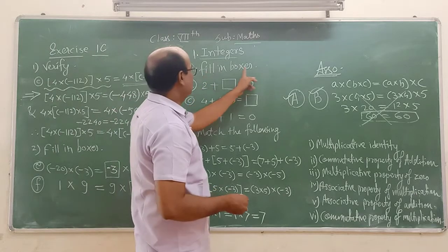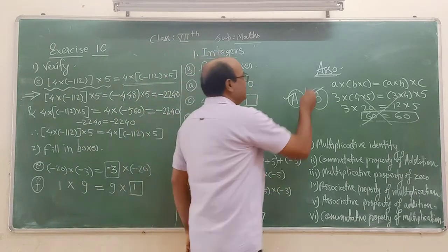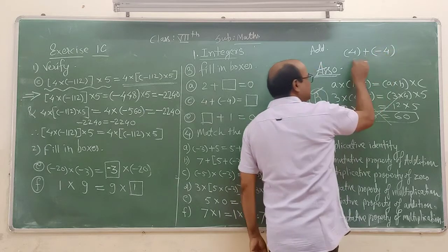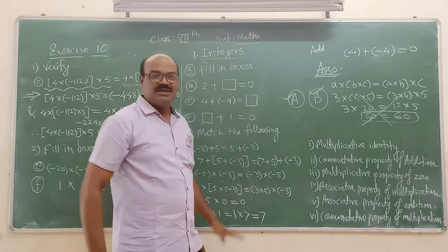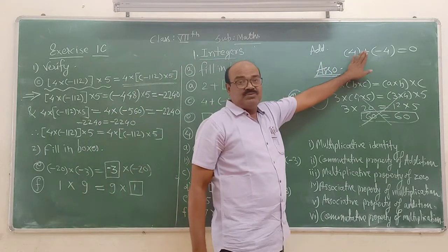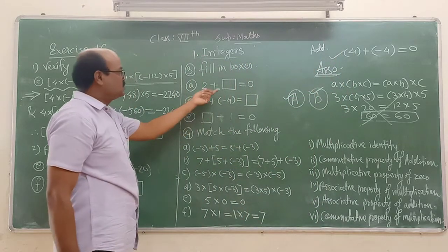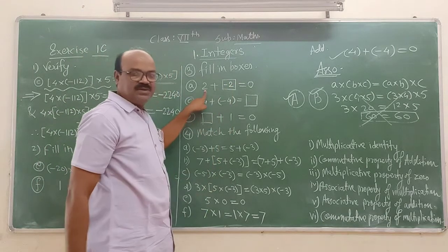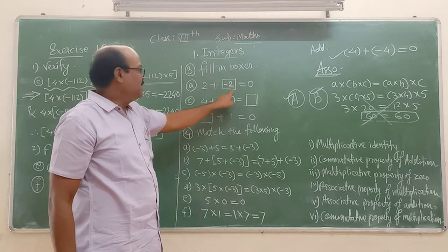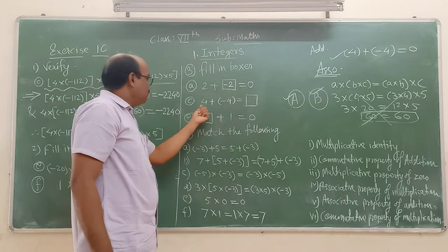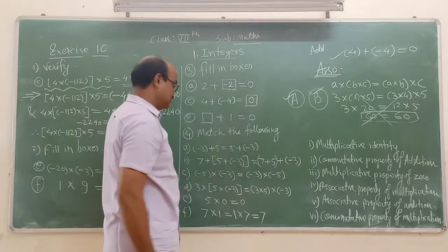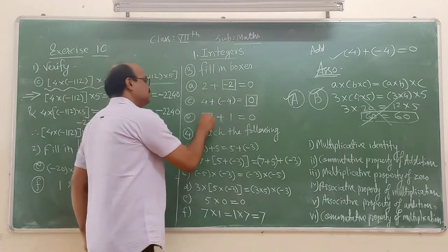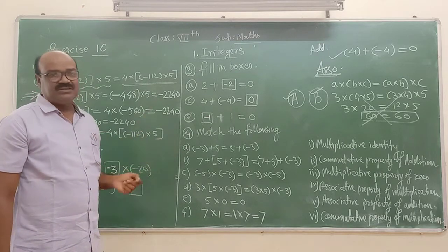The third question is fill in the boxes. 2 plus what equals 0? Regarding additive inverse, students, we have seen that if 4 is an integer, its additive inverse will be minus 4, and their addition will be 0. So the additive inverse of 2 is minus 2. 2 plus minus 2 equals 0. Similarly, plus 4 and minus 4 — their addition is 0. And if 1 is given, its additive inverse will be minus 1.